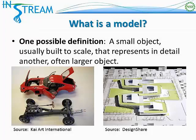One possible definition for the word model is a small object, usually built to scale, that represents in detail another, often larger object. In this picture on the left we have a model car. This model car is not as large as a real car and does not have the same functionality, but it gives us a pretty good idea of what a car is, what the different parts are, and in this case we even see what is inside a real car. So it is a smaller and simplified version of a real car.